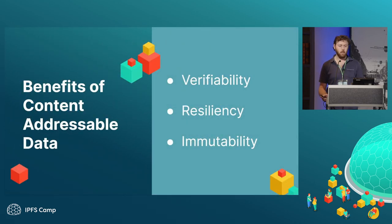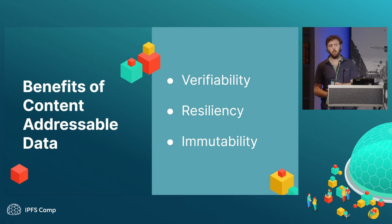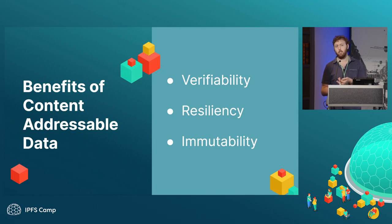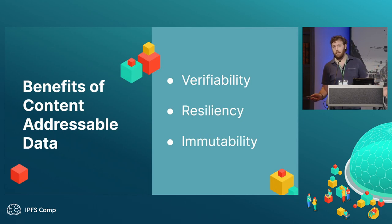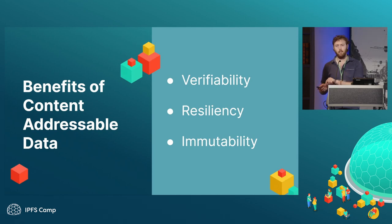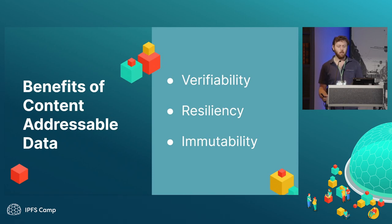Some of the big benefits we get out of content-addressable data are verifiability — you know the thing that you asked for is the thing you got. That's not necessarily true with traditional links, because it's just whatever the custodian decides to give you at the time. You go to dropbox.com slash the thing at the bottom of the link of the academic article that told you that's where their pile of code was, and maybe it gives you that, or it could be something else. There's no verifiability.